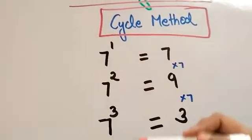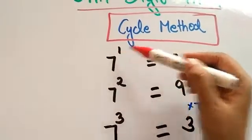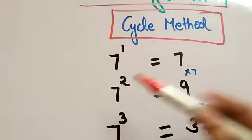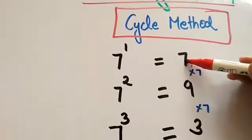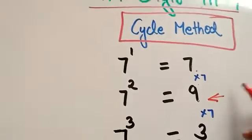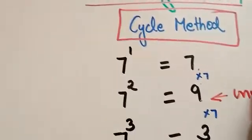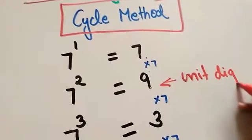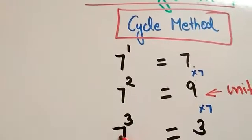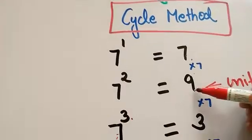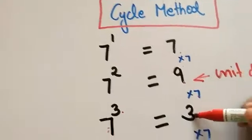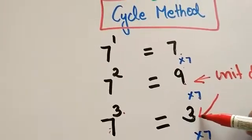Write down: 7 raised to the power 1 is 7. 7 raised to the power 2 means 7 into 7 is 49, so the unit digit is 9. 7 raised to the power 3: 9 into 7 is 63, so the unit digit is 3.